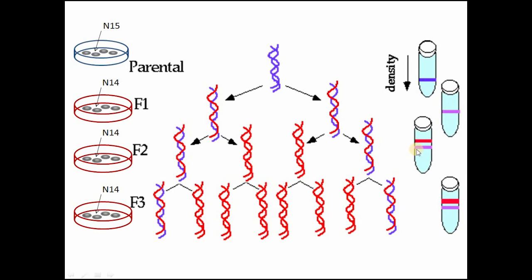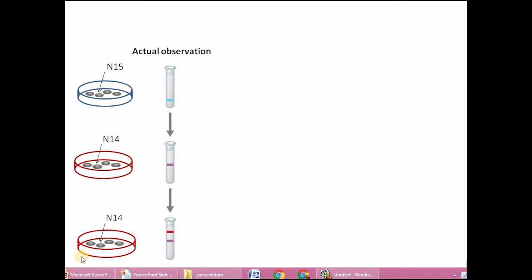When E. coli was grown to the next generation in N-14 medium, 50% hybrid DNA and 50% new DNA was produced. After spinning, both an intermediate band and a new lighter band appeared. In subsequent generations, the hybrid DNA count stays at two while new fully-light DNA continues to increase, so the intermediate band gets relatively thinner and the lighter band gets wider.